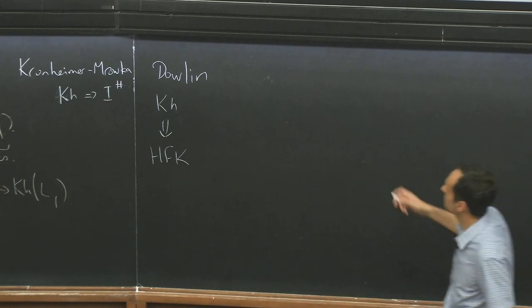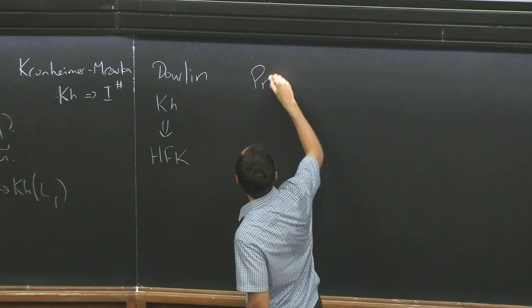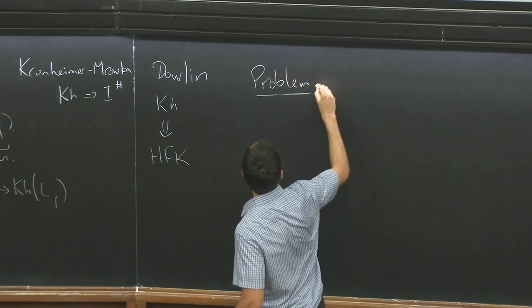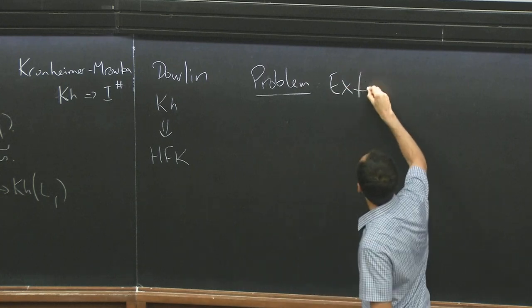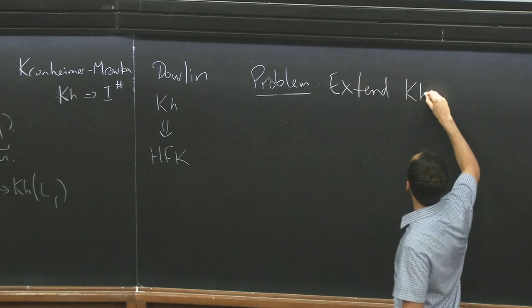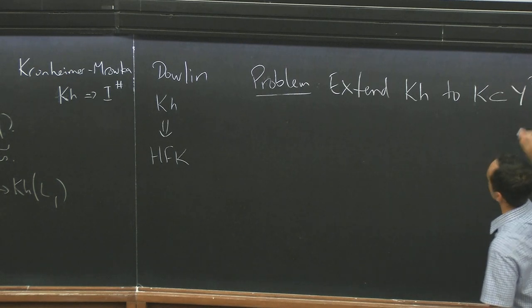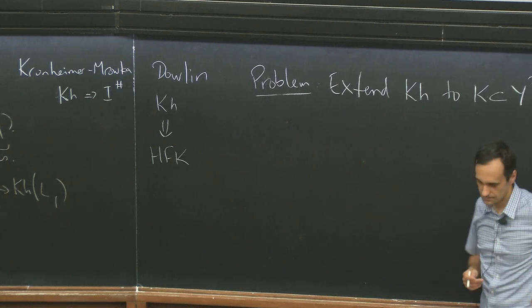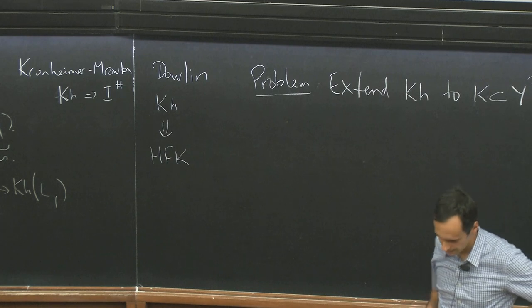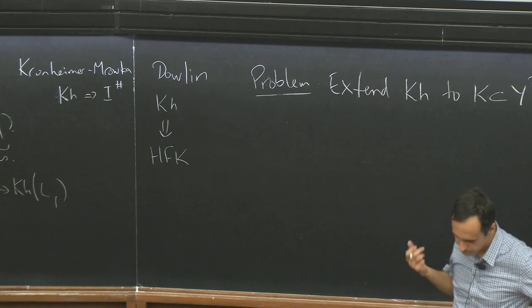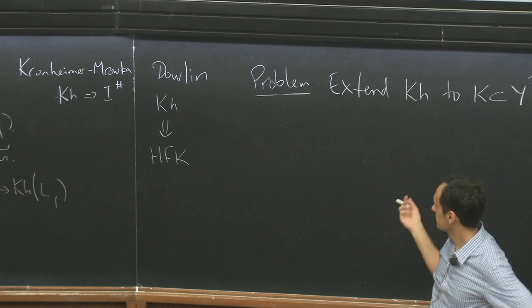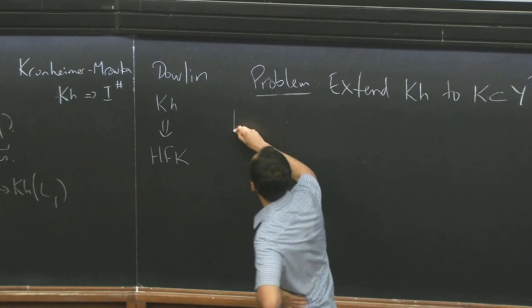So now an important problem is to see if we can extend this theory to knots in some other three manifolds rather than R3. Just like knot Floer homology works for other three manifolds. So there are different approaches to doing this.